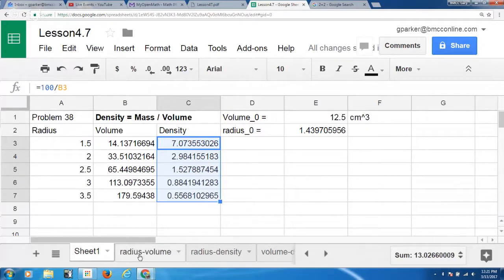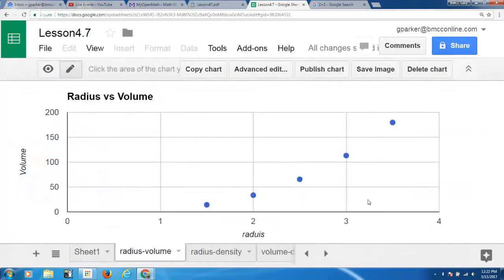Looking at the graphs of these, if I ask the computer to graph radius versus volume, I get this graph here, and I can see as the radius increases, the volume increases. If you put a line to that, you'll see they don't quite line up or a straight edge to that. This is curving upward.